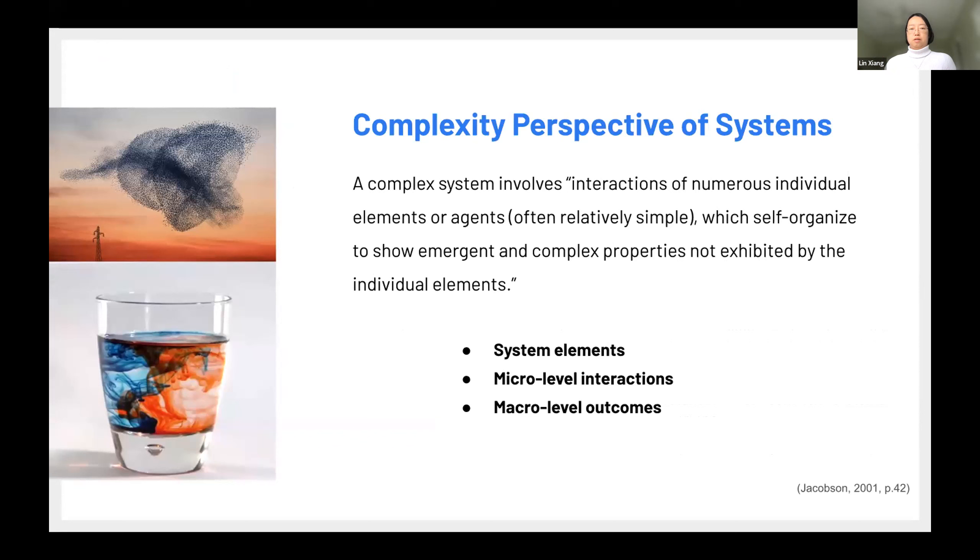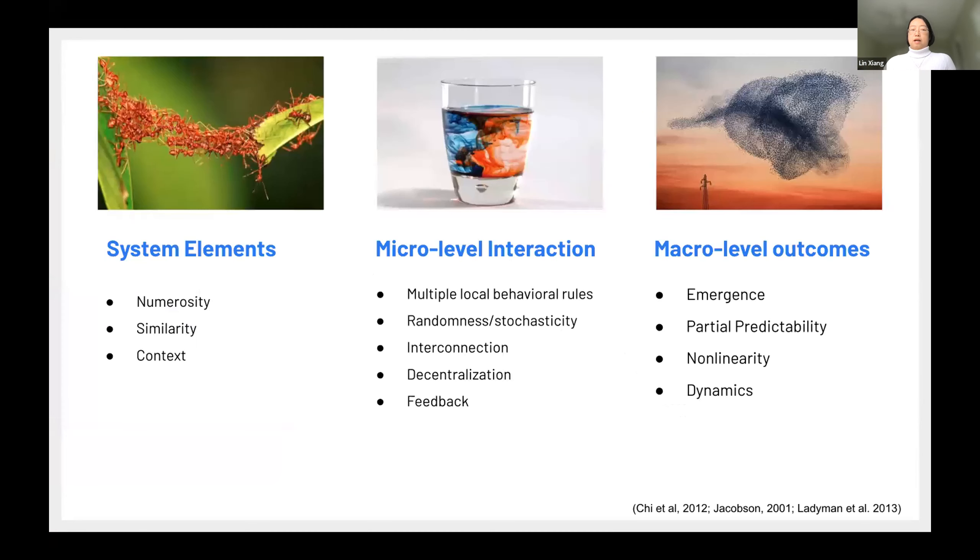The complexity perspective defines complex system as the interaction of numerous individual elements. They actually interact, they self-organize, eventually show this emerging complex properties that are not exhibited by the individual elements. So there's three key things in this definition. There are elements, their interaction, and their macro level outcomes. And then under each aspect, you can see there are some concepts related to this aspect.